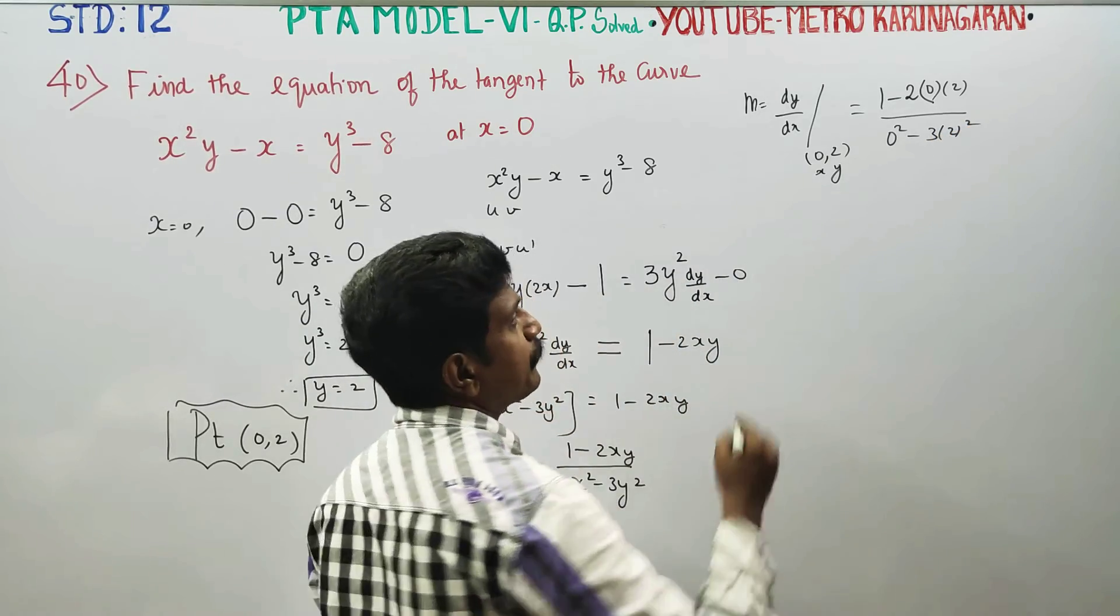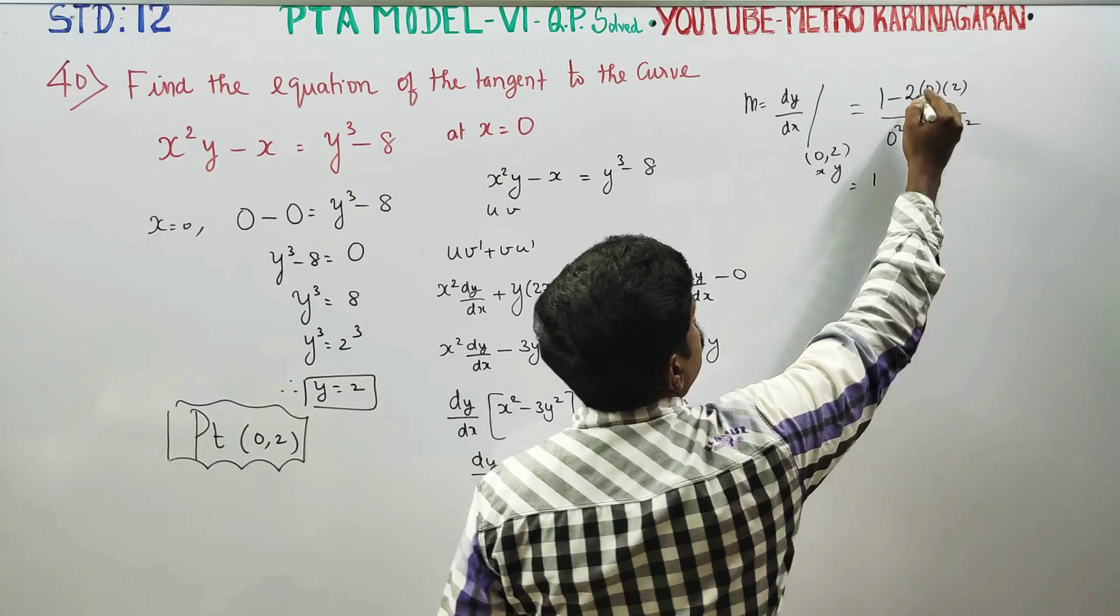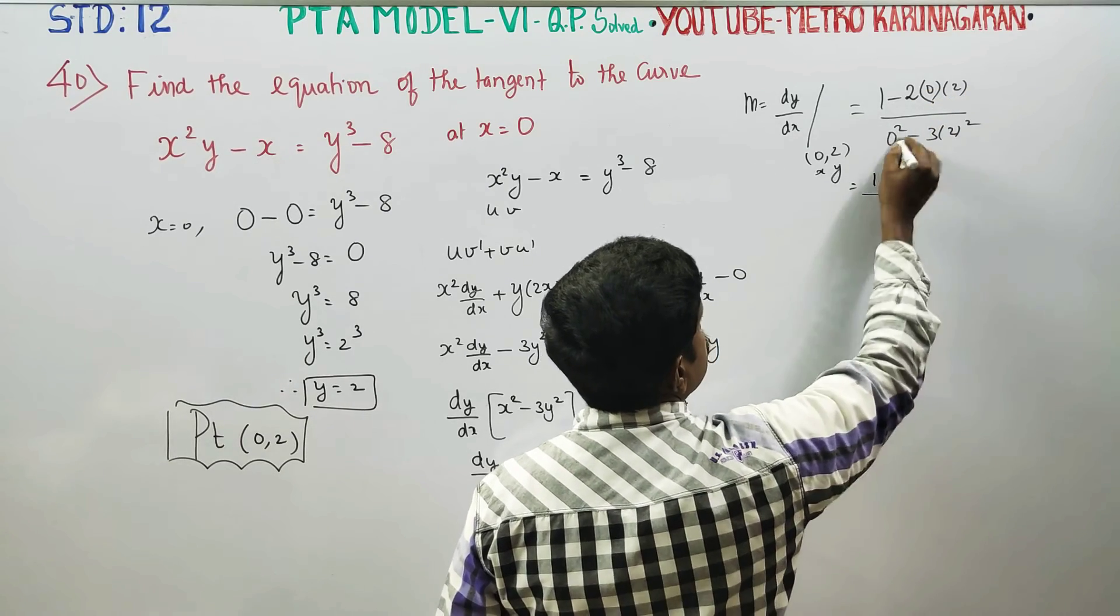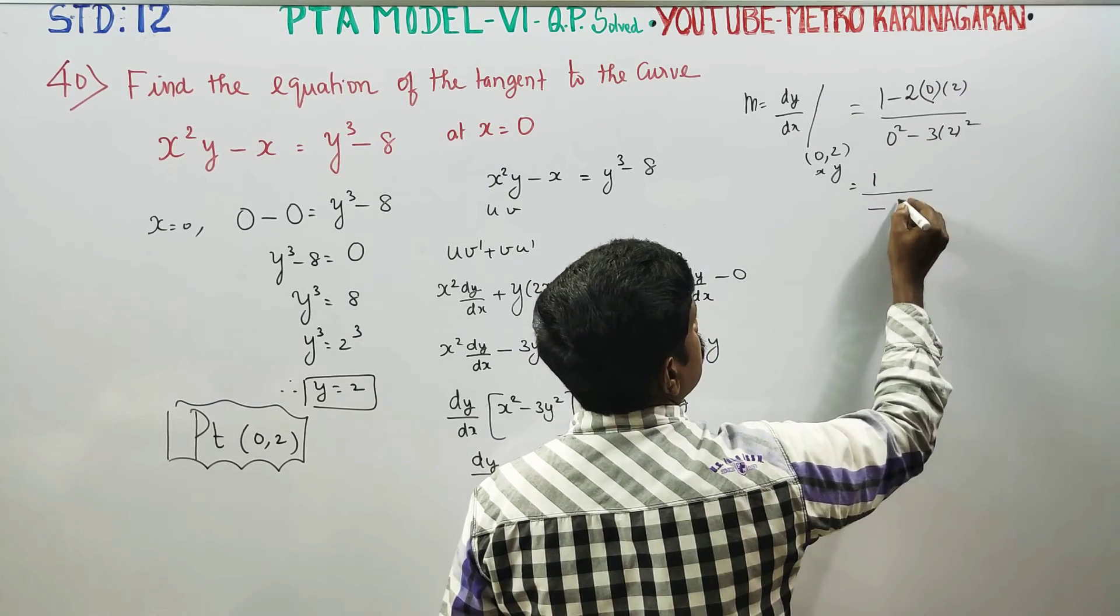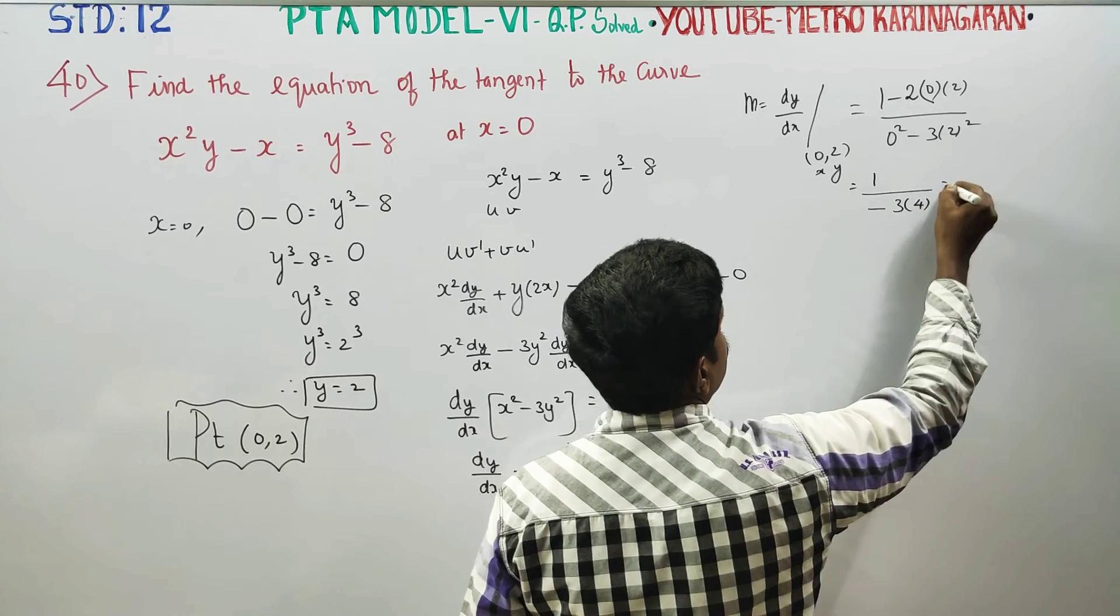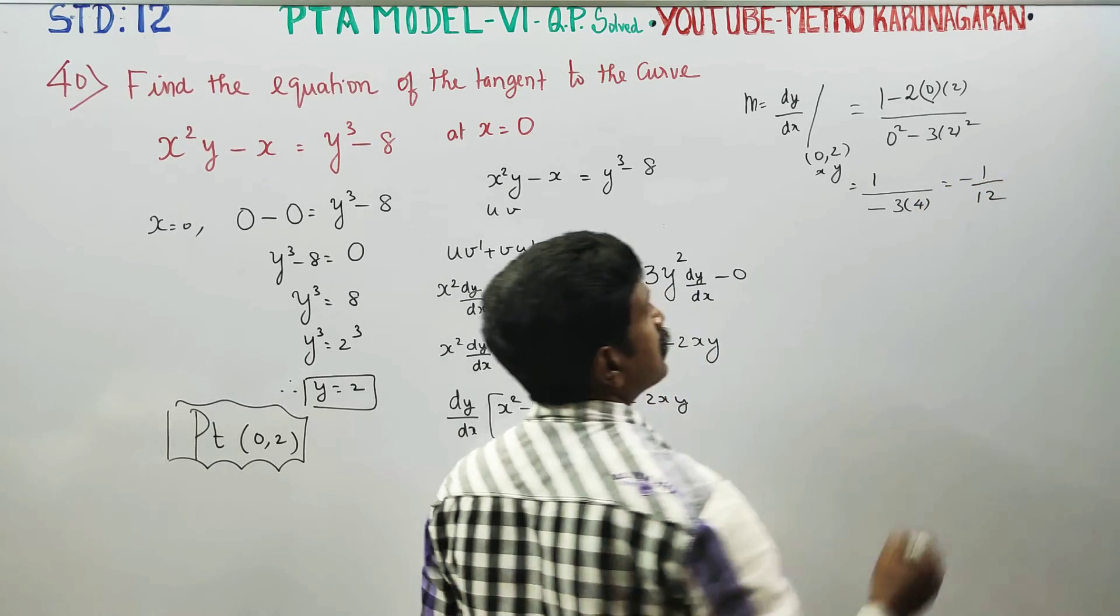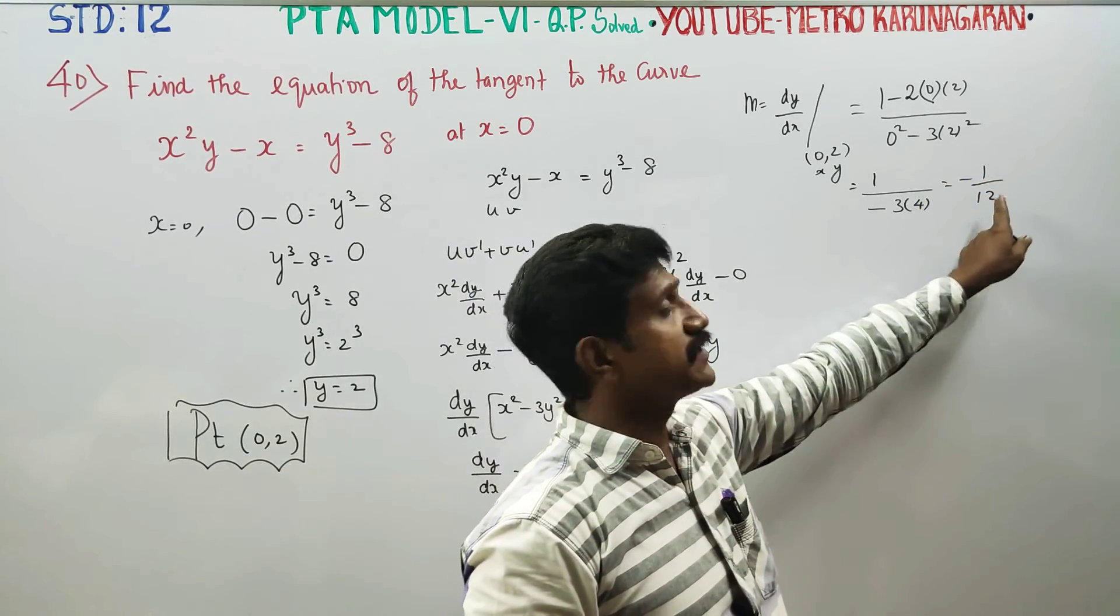1, 2 into 0 is 0. This is 0. Minus 3, 2 squared is 4. Answer is minus 1 by 12. 4 times 3 is 12. This is my slope.